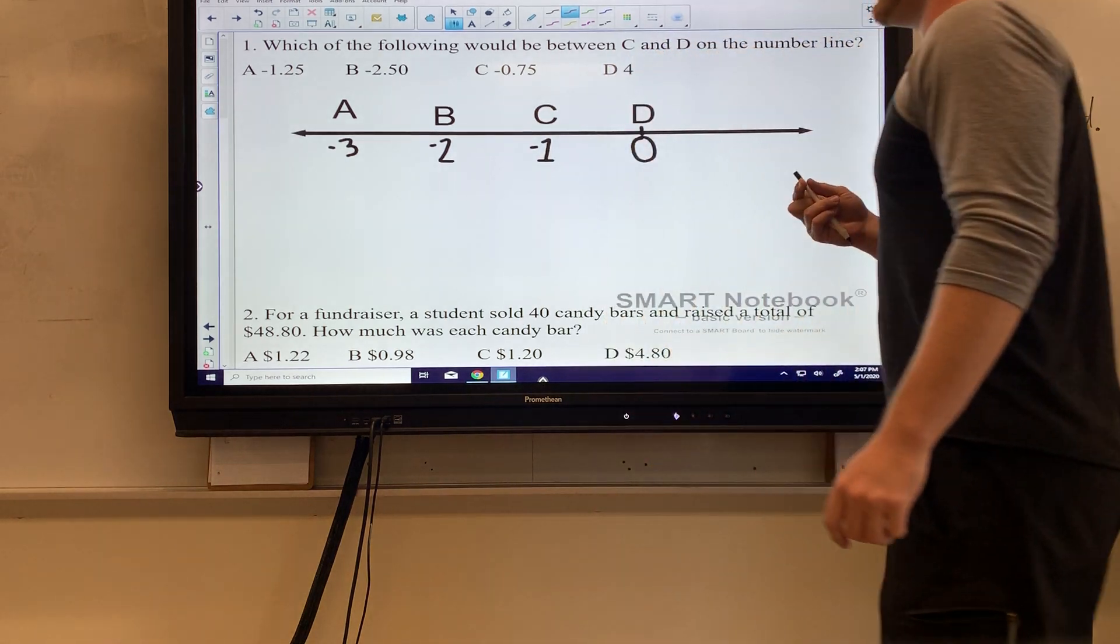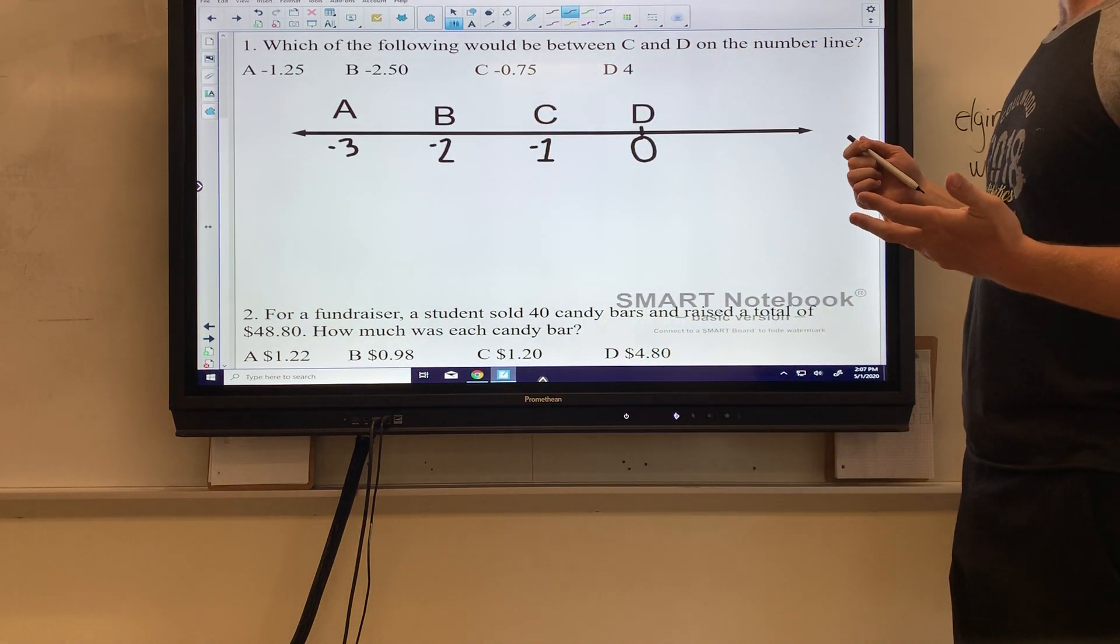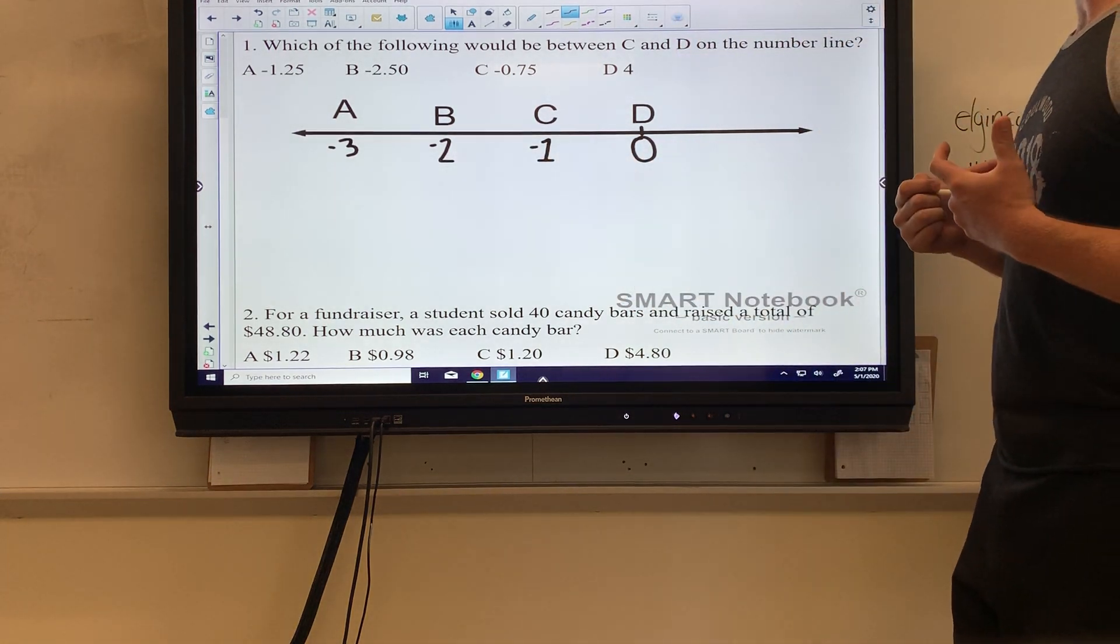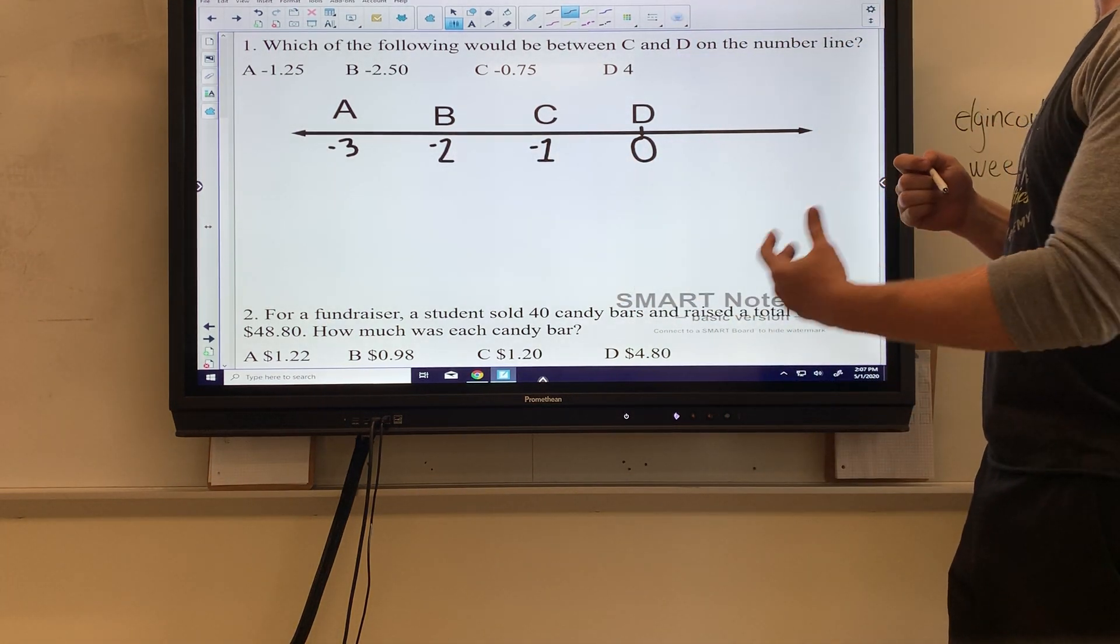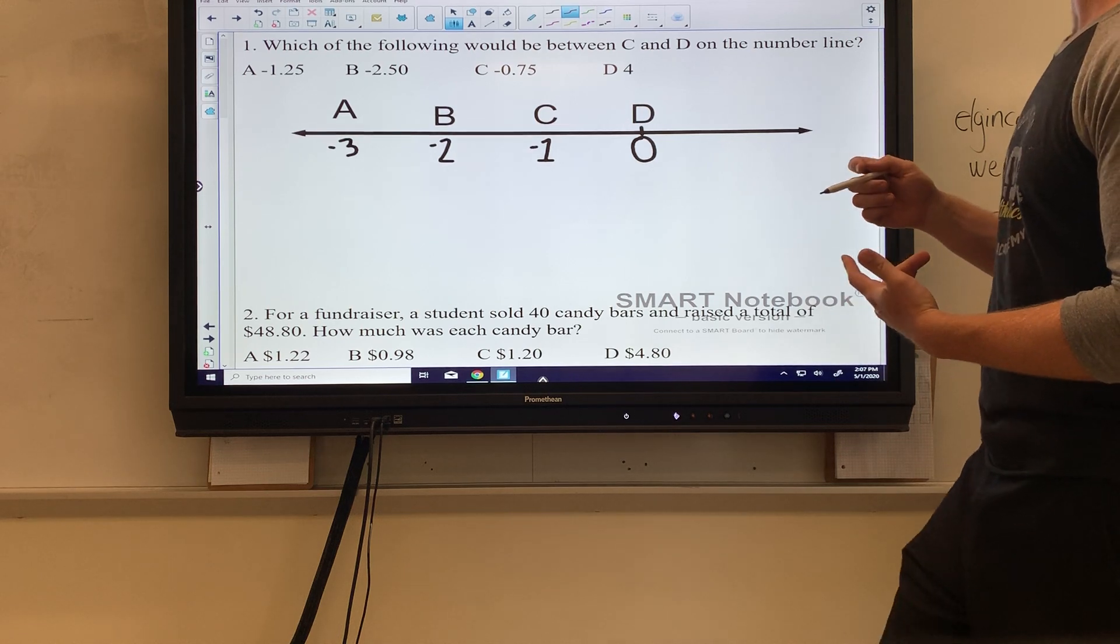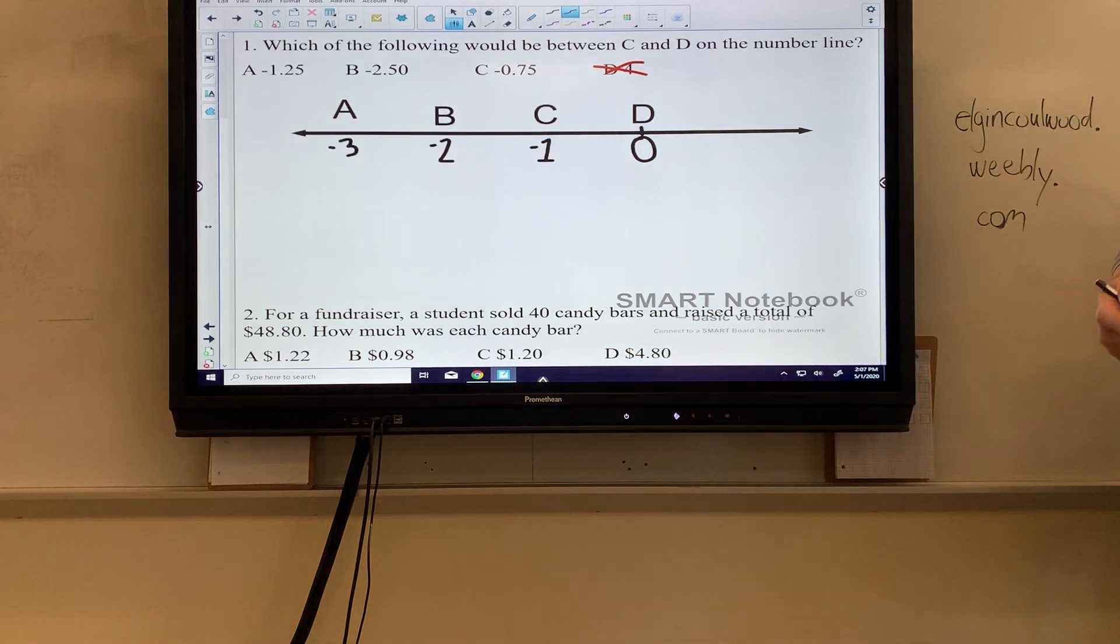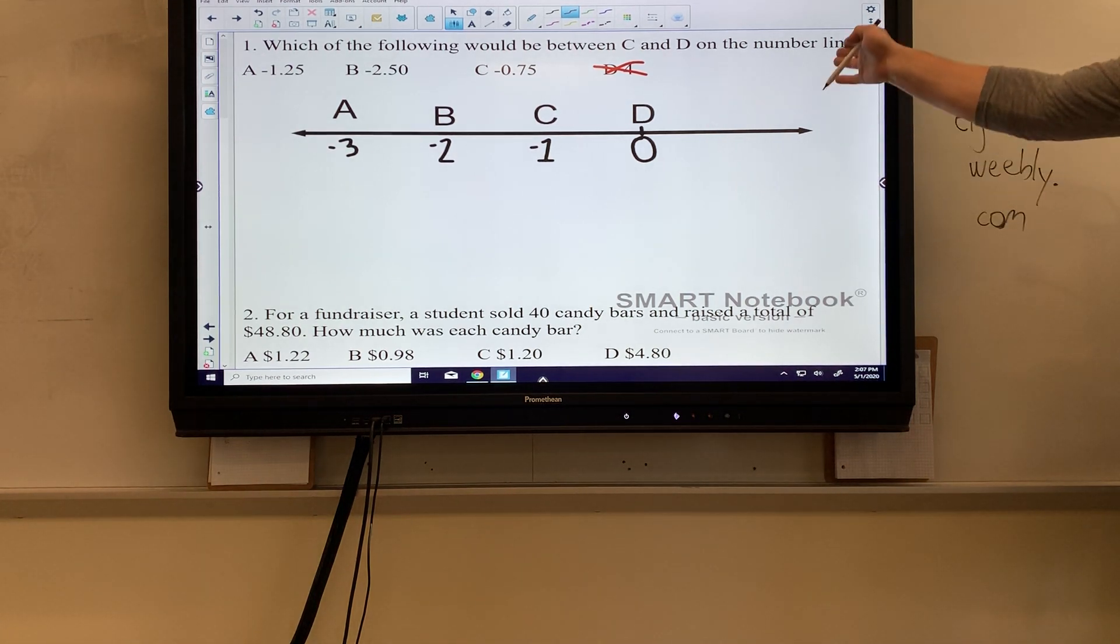Number one: What's the final value between C and D on the number line? If I'm looking at all these letters, they're all above a negative integer, so all of these are going to be negative numbers. I know off the bat I can eliminate a bad answer choice. D is absolutely incorrect—it cannot be positive 4. That would be way over here.